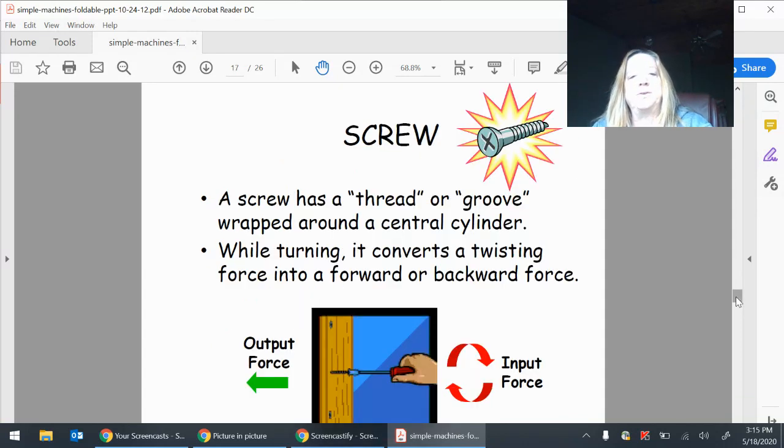Now the screw is another simple machine. A screw is a thread or groove wrapped around the central cylinder. While turning, it converts a twisting force into a forward or backward force. Output, input force.